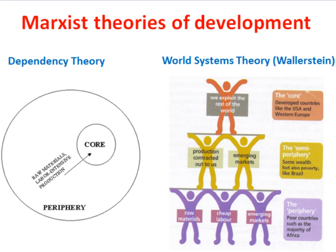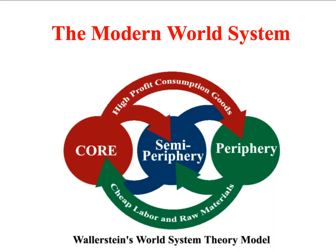World Systems Theory is very similar to Dependency Theory but also suggests that there is a third group of countries called the semi-periphery, which is intermediate between the rich core and the periphery of poorer nations. World Systems Theory argues that the capitalist economic system is not merely a collection of independent countries engaged in diplomatic and economic relations, but must instead be understood as a single system in which the world has been carved up into three unequal economic zones, with wealthier zones exploiting the poorer ones.